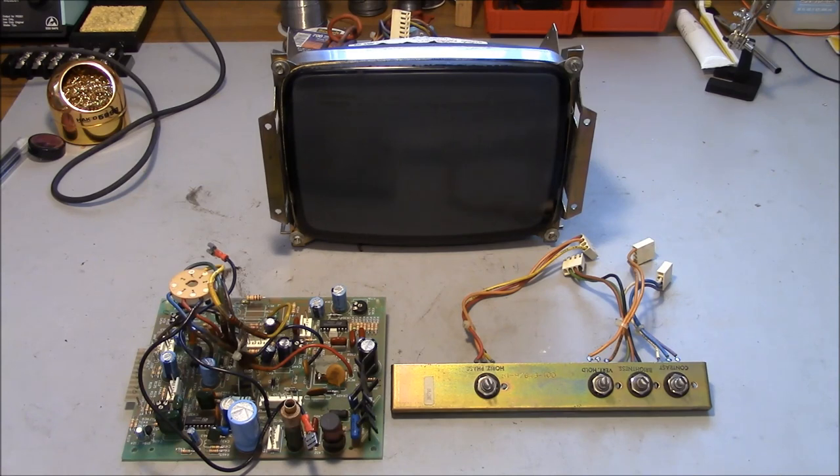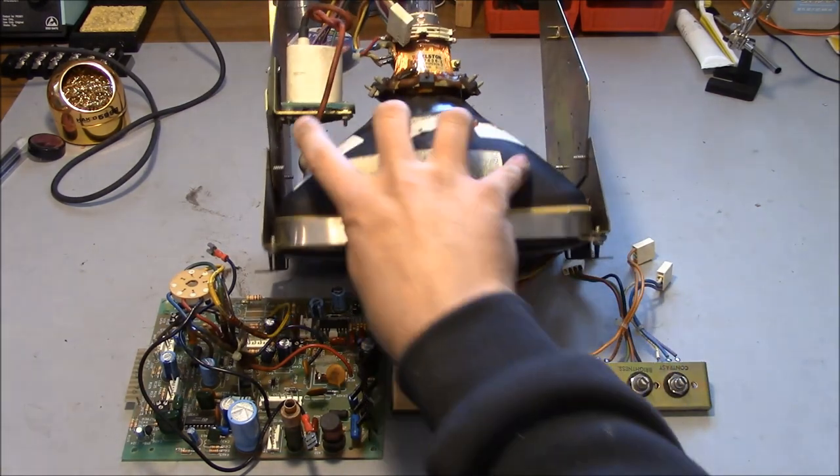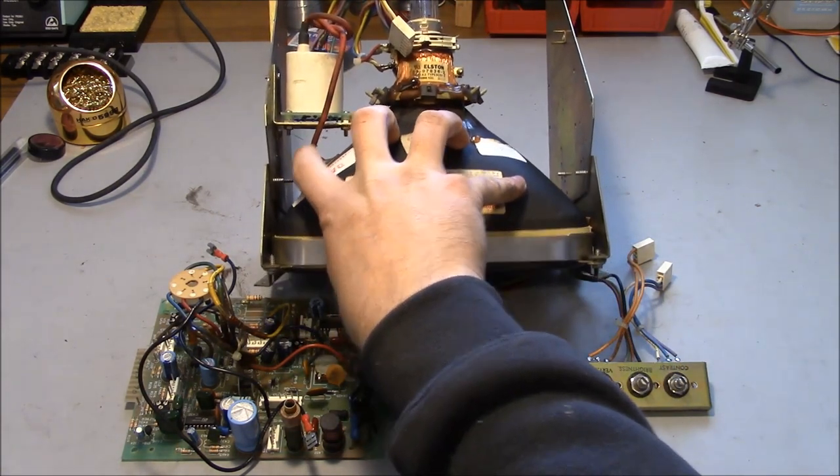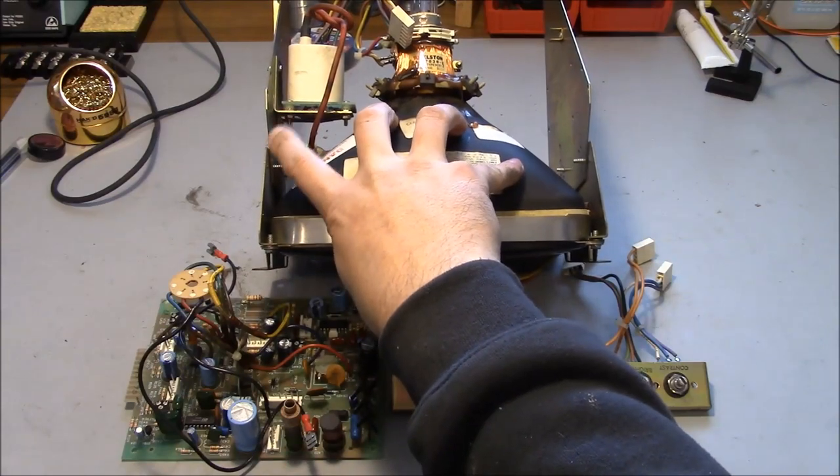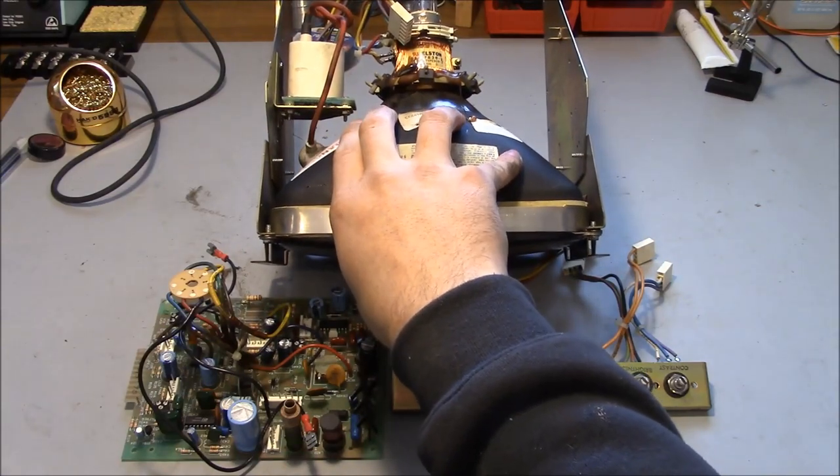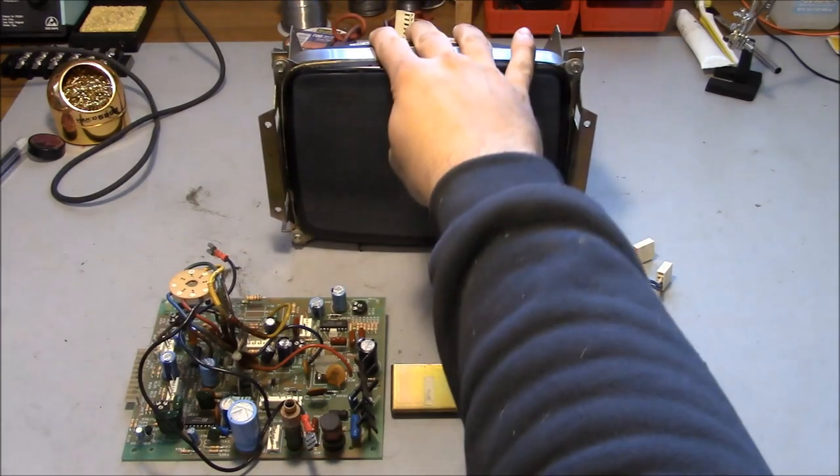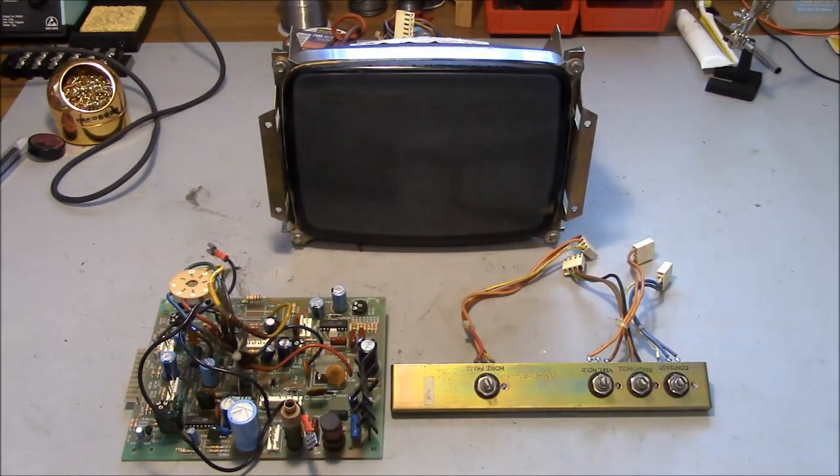The symptoms of this CRT are that it has no picture. There's no raster, no picture, no nothing. The grid heaters are on. I can see the heaters glowing at the back of the CRT tube and I know that it has high voltage because I pulled the high voltage lead out and shorted it to the chassis and it'll jump the arc. So it's got high voltage and the grid is doing something but I have no picture.